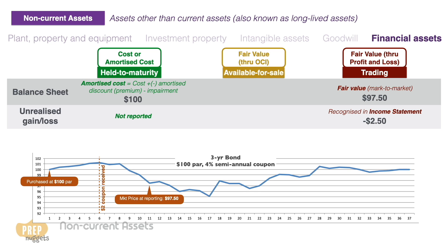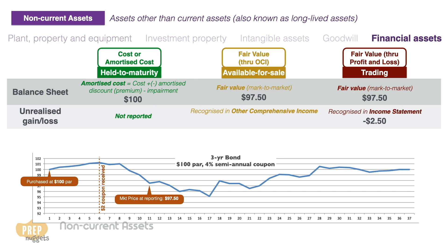Like trading securities, available for sale securities are reported on the balance sheet at fair value. However, any unrealized gains and losses are not recognized in the income statement but are reported in other comprehensive income as a part of shareholders' equity. Since the market value of the bond has dropped to $97.50, the book value reported in the balance sheet is $97.50 and the loss of $2.50 is reported under other comprehensive income as part of shareholders' equity.